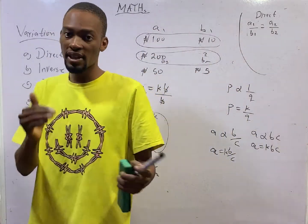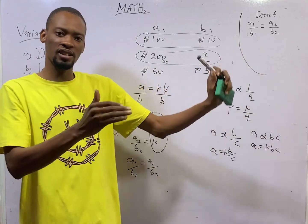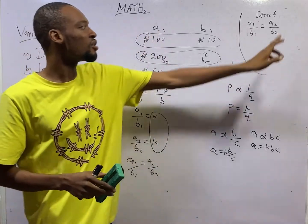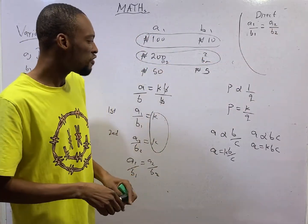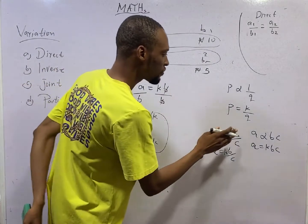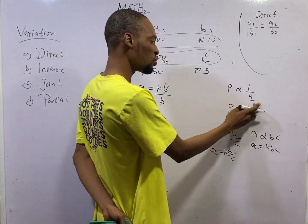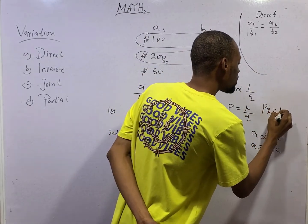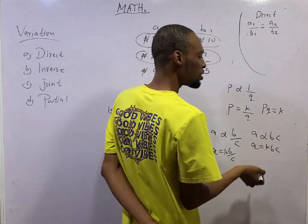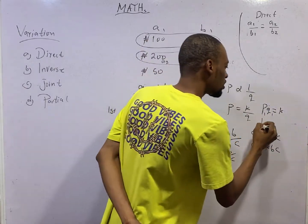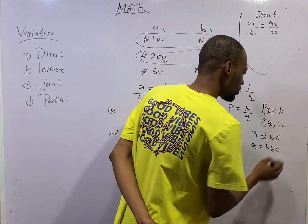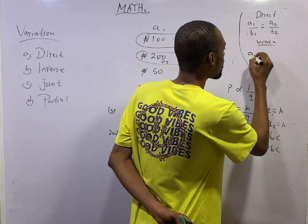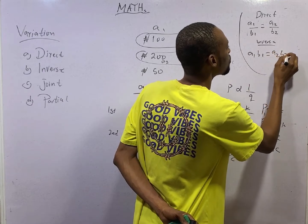For direct, A1 over B1 equals A2 over B2. Here A1 is the first case, B1 is the second case. They will say find this if that is that, so that other case is your A2 and B2. Now for inverse, if P is inversely proportional to Q and P equals K over Q, it means that P times Q will be equals constant. If P times Q is constant, P1 Q1 is constant, P2 Q2 is also equals constant. So for inverse, A1 B1 will be equals A2 B2.